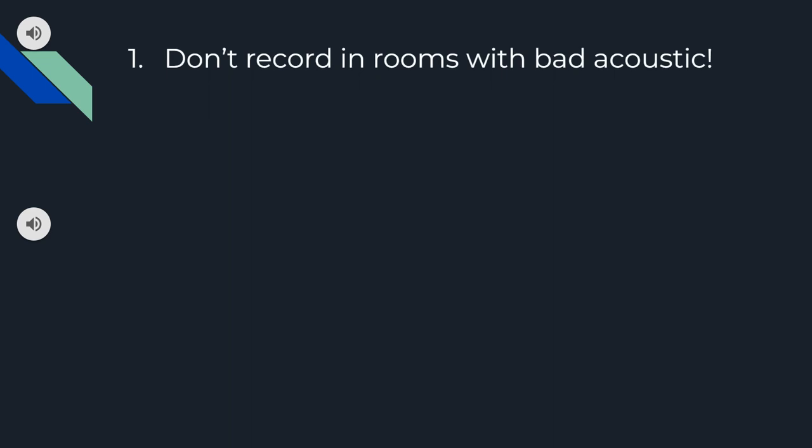The first thing which is very important in voice acting is to not record in rooms with bad acoustics. The room tone refers to the inherent natural sound of your recording space while you don't record lines from your script.